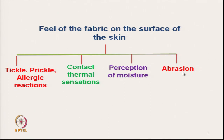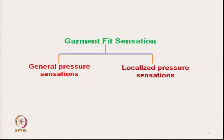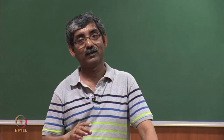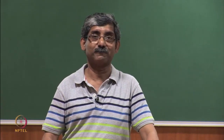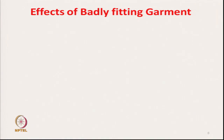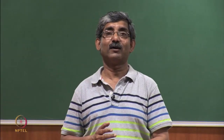Now we will discuss only garment fit. Garment fit has two aspects: one is overall pressure - general pressure sensation of the body - and another is localized pressure sensation, which applies pressure at certain body parts. These two sensations are important and are related with garment fit. So what are the effects of a badly fitted garment and how does it affect our comfort sensation?